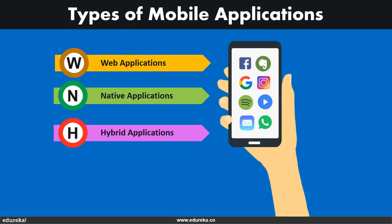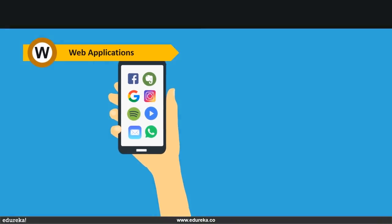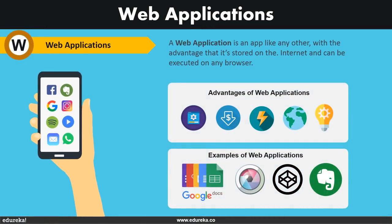Appium is used for native apps, hybrid apps, and web apps. These are just types of mobile applications, classified into three types: web applications, native applications, and hybrid applications. Let's take a look at them one by one and understand the differences between these types of applications.